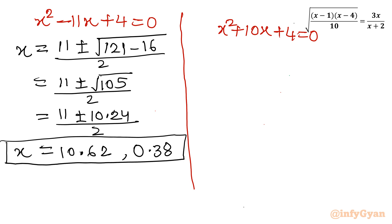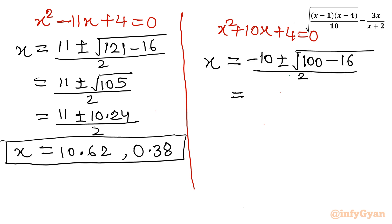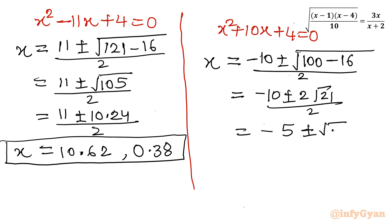For the second quadratic equation x squared plus 10x plus 4 equals 0: x equals (minus 10 ± sqrt(100 minus 16)) over 2, which is (minus 10 ± sqrt(84)) over 2. Since sqrt(84) equals 2*sqrt(21), this simplifies to minus 5 ± sqrt(21). This gives approximately minus 0.42 and minus 9.58.